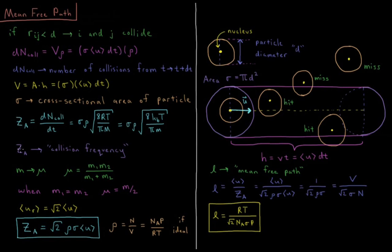We can define the collision frequency as the derivative of the number of collisions with respect to time — the rate at which collisions occur. Substituting in values, that's sigma times rho times the average velocity u, where the average velocity from the Maxwell-Boltzmann distribution equals the square root of 8kT divided by pi times the mass of an individual gas particle.